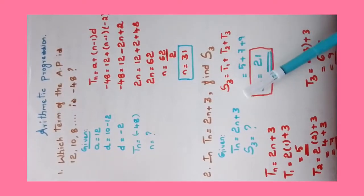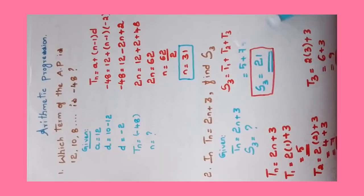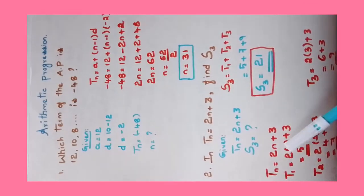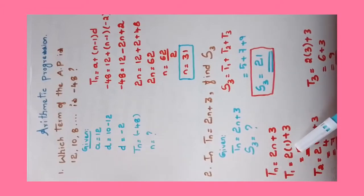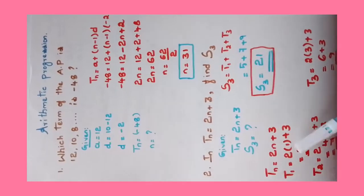S3 means sum of three terms, the first three terms: T1, T2, T3. If it is S4, sum of the first four terms: T1, T2, T3, T4. To calculate S3 we need each term T1, T2, and T3. Tn value is given: 2n + 3. In n's place if you substitute 1, you'll get T1. For T2, substitute 2, you'll get T2 value. Same for T3.